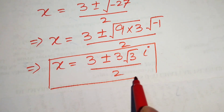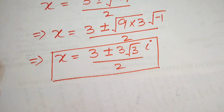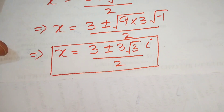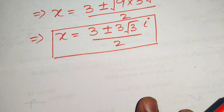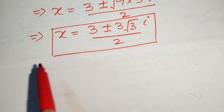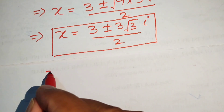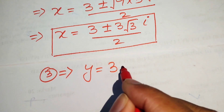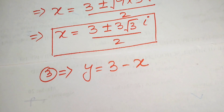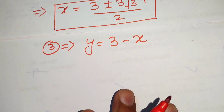These are the two complex roots of the given equation. To find the corresponding values of y, we use equation number 3: y equals 3 minus x.